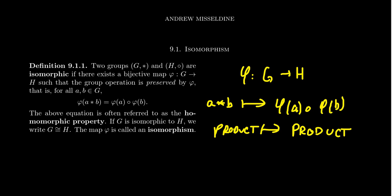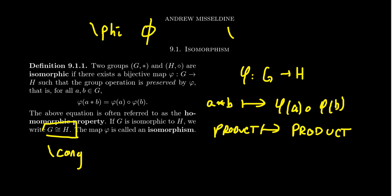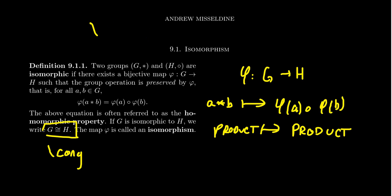If G is isomorphic to H, we denote this as G ≅ H. The isomorphic symbol is, in geometry, the congruent symbol. In LaTeX, this is backslash C-O-N-G. Also, if you want to write the function phi, backslash phi gives you one symbol, but the more common variant in group theory is var phi — backslash var phi — which produces the more handwritten phi symbol. So if G is isomorphic to H, we say the function phi is an isomorphism.